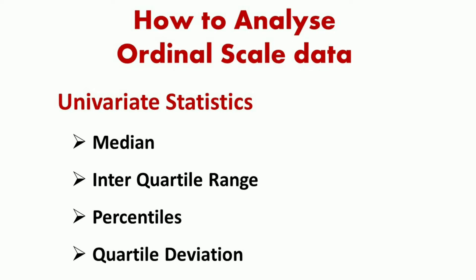Now let's see how to analyze ordinal scale data using statistical techniques. If we have only one variable — the univariate case — then in place of mean and standard deviation, the appropriate univariate statistics for ordinal data are median, percentile, and quartiles like quartile deviation and interquartile range. The median is the measure of central tendency showing what the average respondent might think. Percentiles and quartiles are measures of spread or dispersion, showing whether responses are clustered together or scattered across the range.